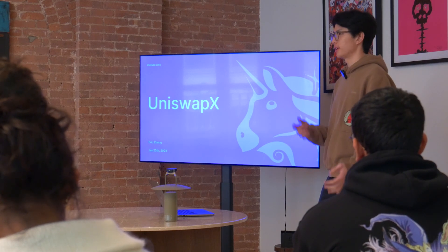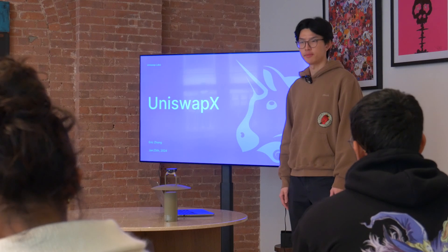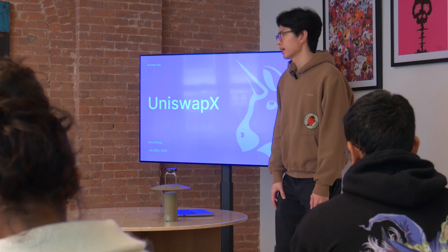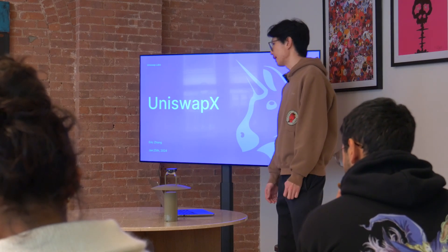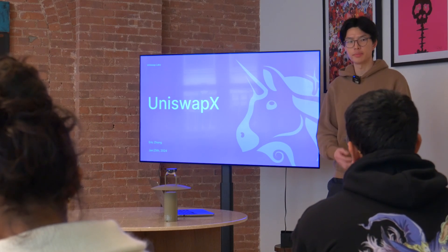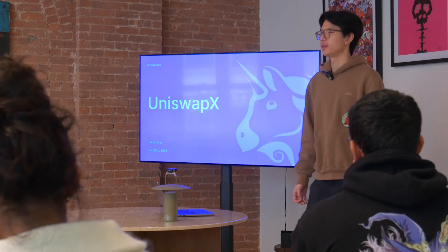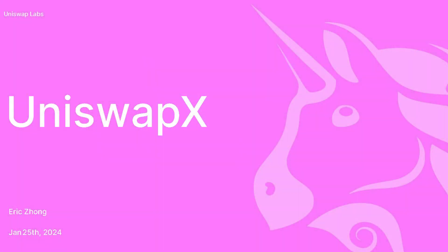So Uniswap, we're a very dApp-driven protocol. We don't really work that much at the interop layer or infrastructure layer. But I'll talk about Uniswap X, one of our newest products. There will be some really cool things to talk about in terms of interoperability, especially within the realm of what does it mean to make a swap, what kind of swap parameters can we choose, and how can we extend this to a cross-chain or multi-chain world?